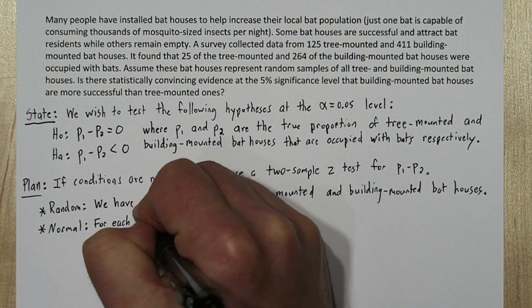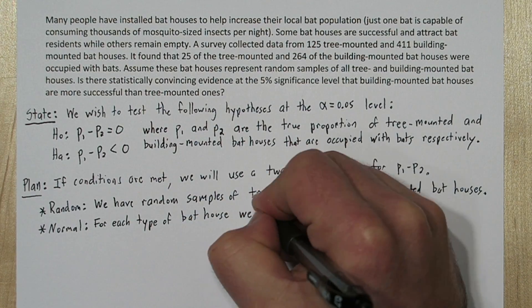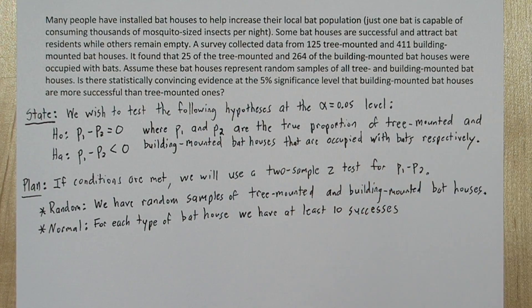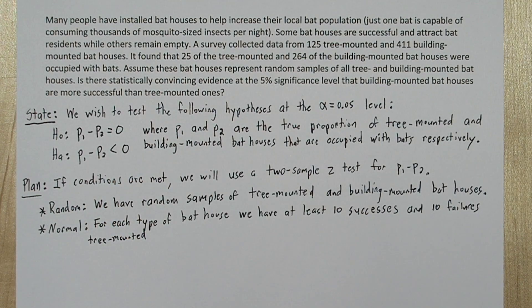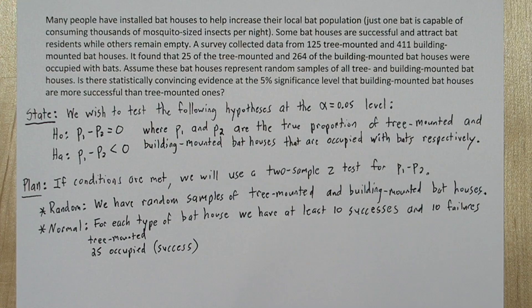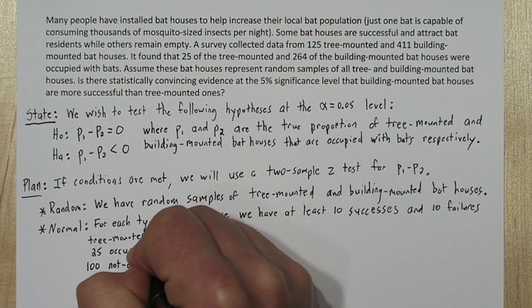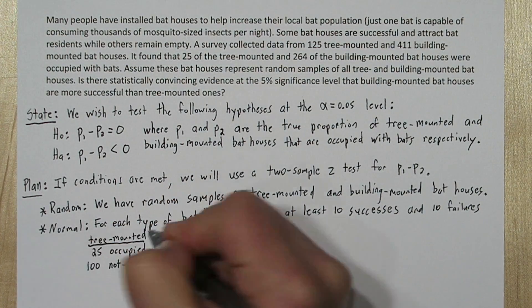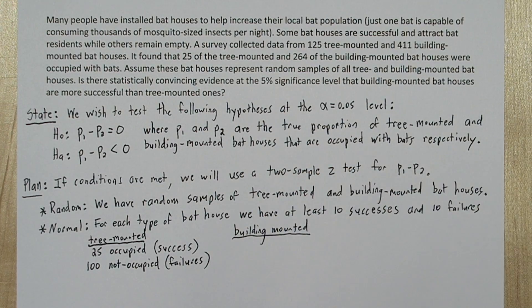For the normal condition, we need at least 10 successes and 10 failures for each type of bat house. So for the tree-mounted bat houses, we have 25 that were occupied, those are successes, and 100 that were not occupied, those are our failures. Both those values are greater than 10, so we're good there.